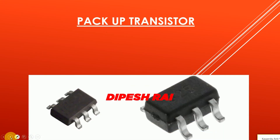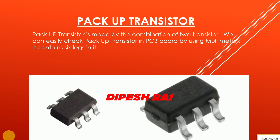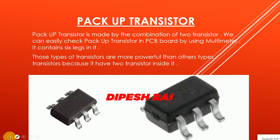Now we are going to discuss the backup transistor. As you can see in the image, the backup transistor has six legs, and you can find identification numbers on it. The backup transistor is made by the combination of two transistors. You can check the backup transistor on a PCB board using a multimeter. These types of transistors are more powerful than other types because they contain two transistors inside.